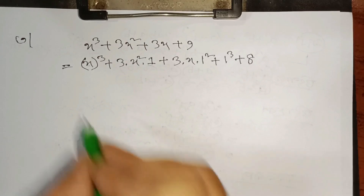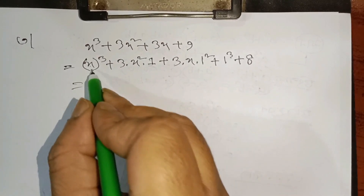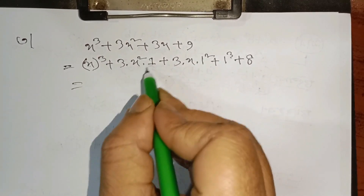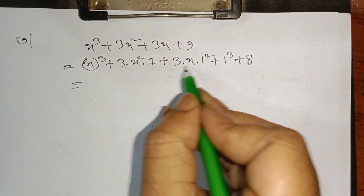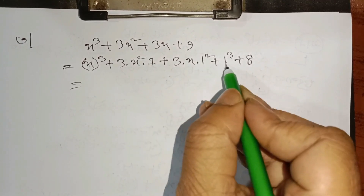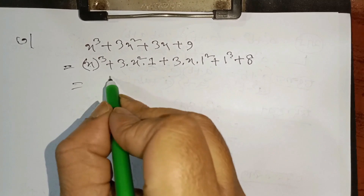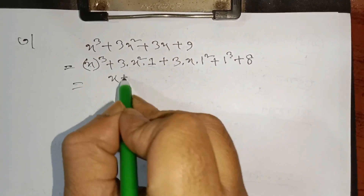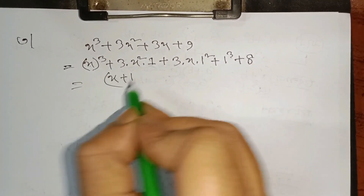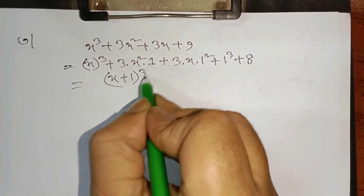We will get a cube plus 3a squared b, plus 3ab squared plus b cube. So we will get (a plus b) all cube.